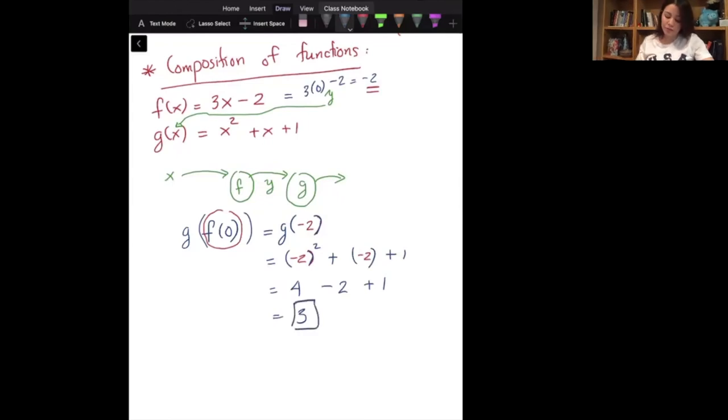Sometimes we would write it in the following notation. We would write g and then a little circle and then f. This does not mean a multiplication. It means a composition of two functions. G composite f of x. That's how they read it.